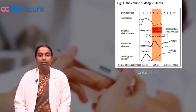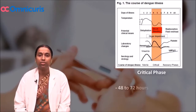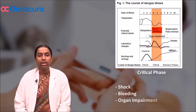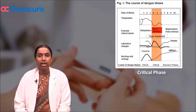Following the febrile phase, the critical phase starts usually between three to five days of fever, or it may start as late as seven days of fever. The critical phase lasts about 48 to 72 hours. During the critical phase, the child develops shock, bleeding, or organ involvement, heralded by a dropping platelet count and rising hematocrit. IgM ELISA will be positive during this phase.